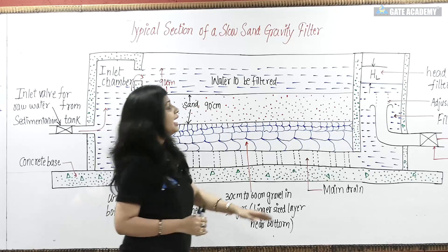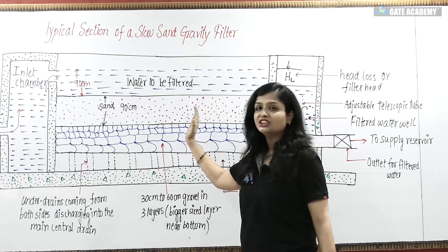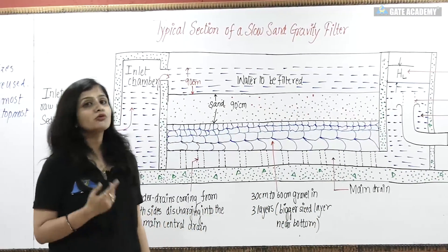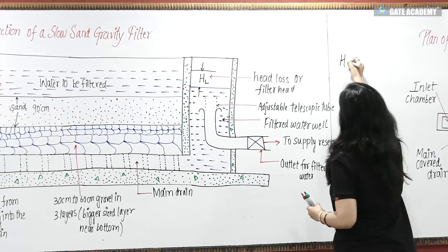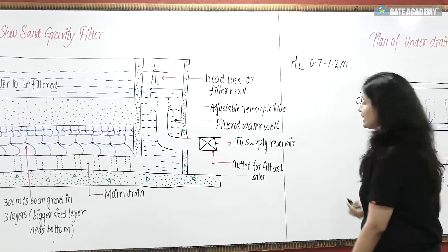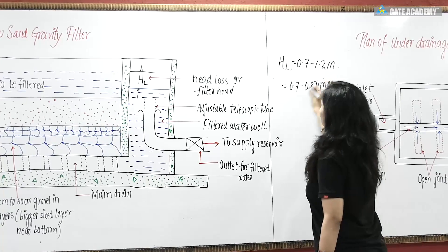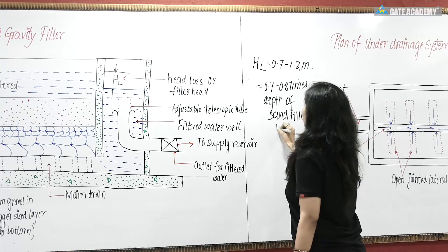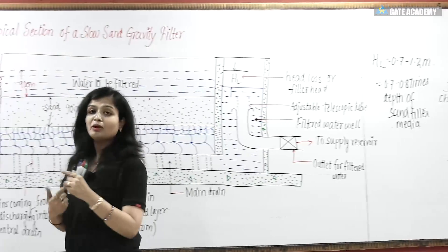When you repeatedly filter water, after a certain time the efficiency of the sand decreases. In that case, you have to clean your slow sand gravity filter. You know it is time to clean when the head loss reaches 0.7 meters — this initial value starts at around 0.2 meters. So when the head loss reaches this limiting value, you must take the filter out of service and clean it.